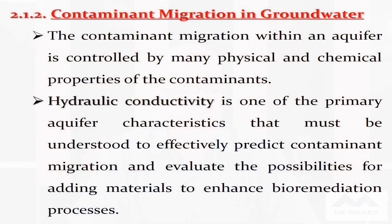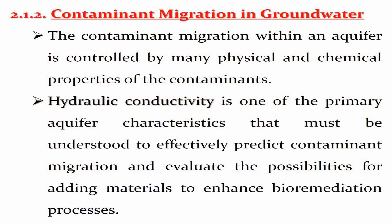Another environmental factor is contaminant migration in groundwater. This migration may occur within the aquifer and can be controlled by many physical and chemical properties of the contaminant. One of these physical properties is hydraulic conductivity, which is one of the primary aquifer characteristics that must be understood to effectively predict whether contaminants migrate, and to evaluate possibilities for adding materials to enhance the bioremediation process.